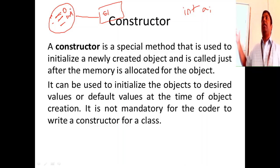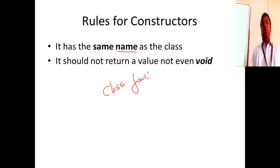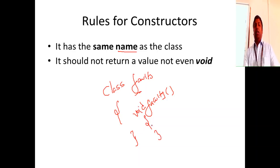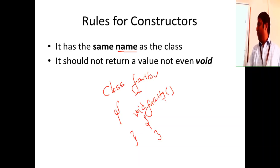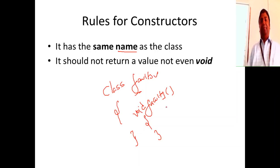You can also pass the values you want to initialize when an object gets created — that is a constructor. The rules for a constructor: the constructor name should be the same name as the class. If I have a class Faculty, the constructor must also be named Faculty with the same capitalization. It should have no return type, not even void. When an object is created for the Faculty class, this constructor will be called and the code inside will execute, so your class members will be initialized to those values.